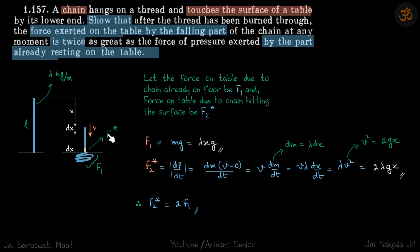Let's calculate both of them. So f1 is due to the chain that is already fallen. So x length of chain is already fallen, so f1 is m into g, and m is lambda times x.